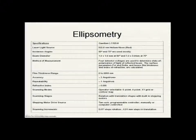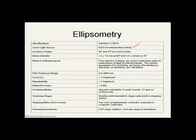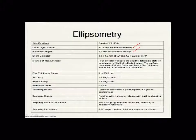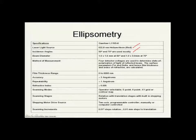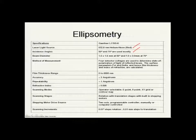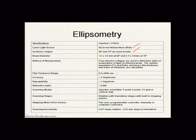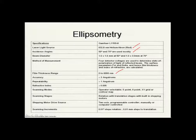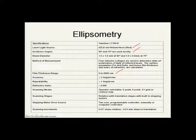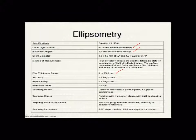For the particular ellipsometer in the clean room, we have a helium-neon red laser light source of a specific wavelength. We can change the incident and reflection angles; two commonly used angles are 50 degrees and 70 degrees for two-angle measurements. A notable characteristic is that it has a very broad operating range — it can measure very thin films up to relatively thick films in the micron range, with very high accuracy and repeatability.